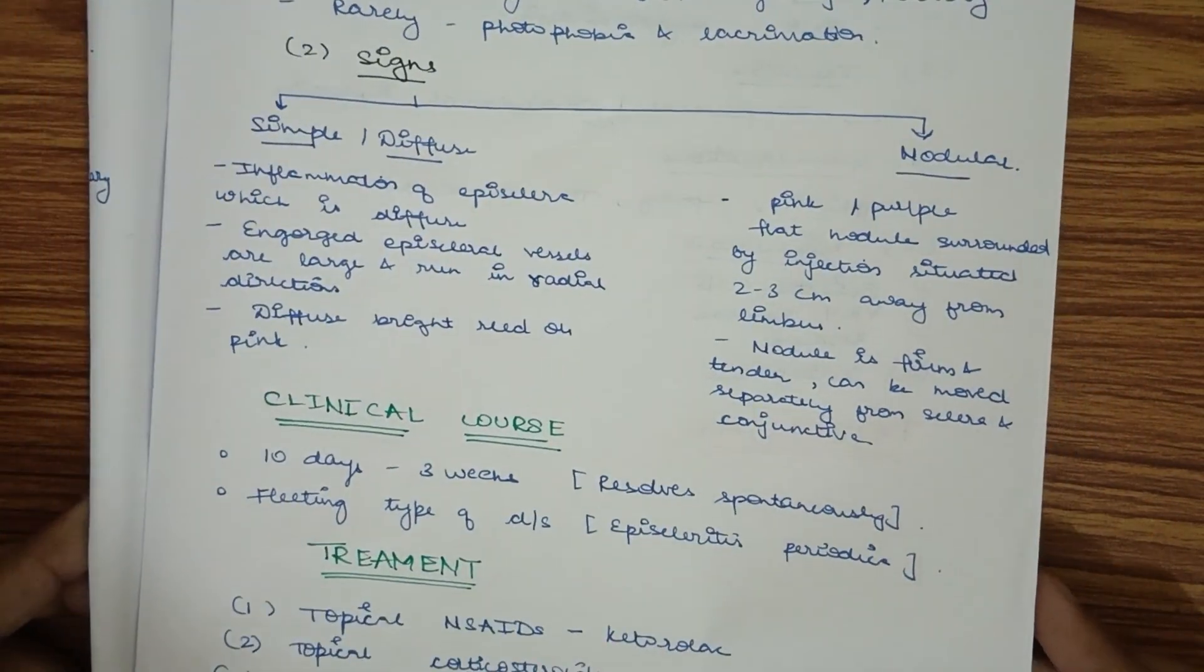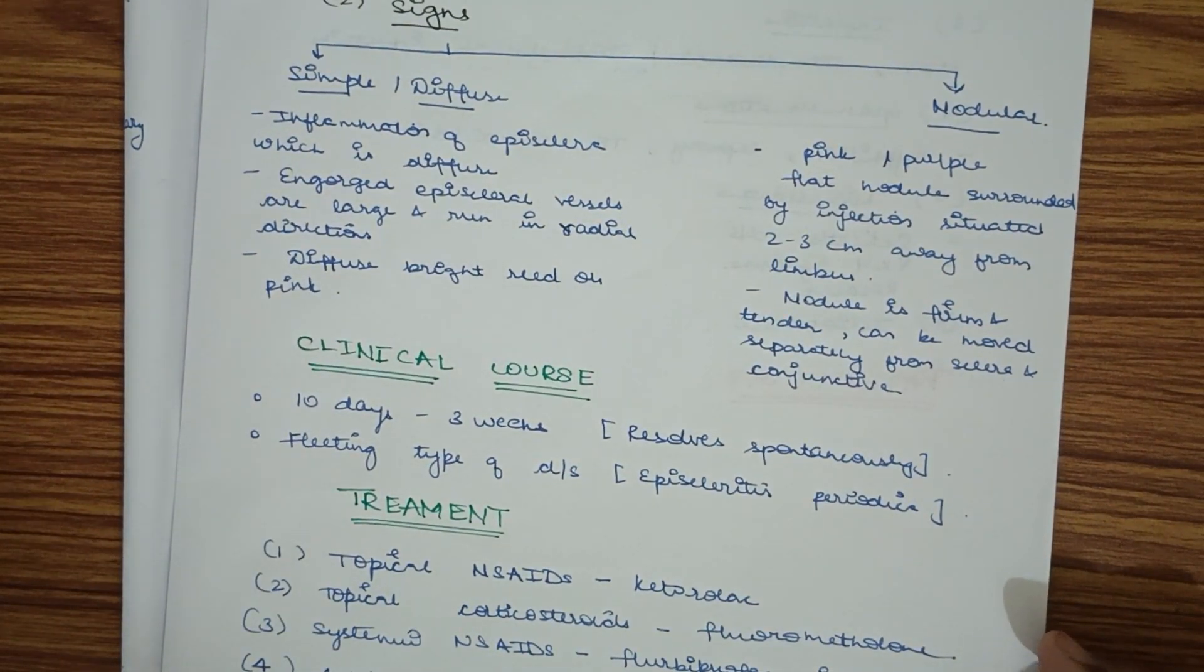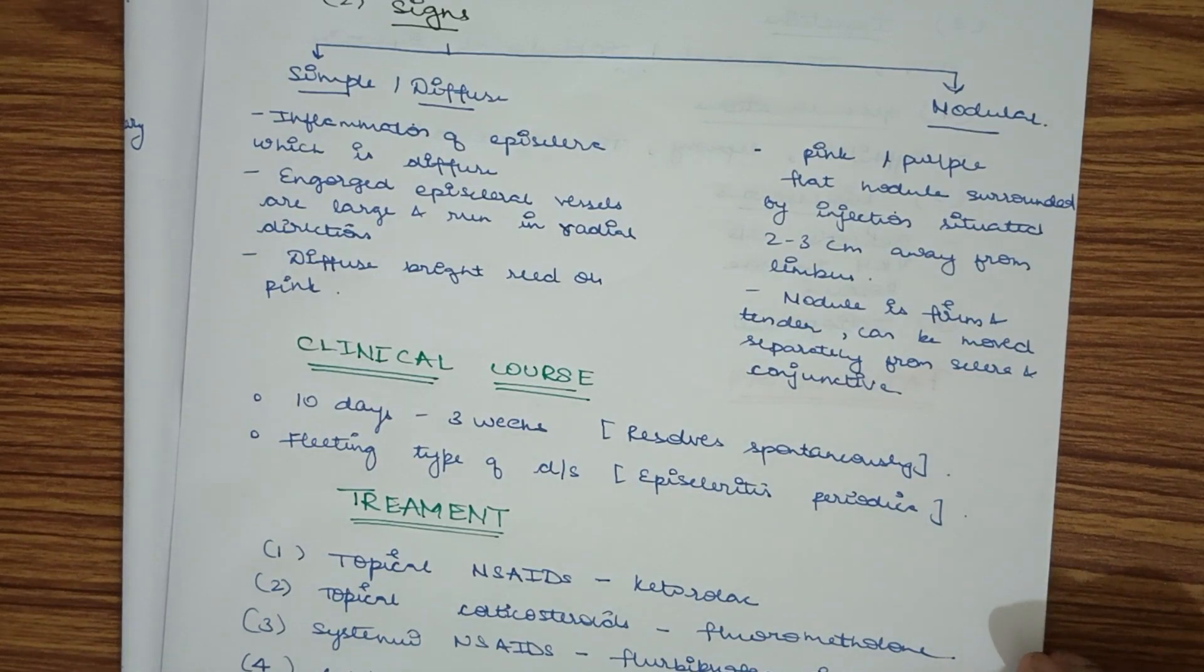Clinical course: it resolves spontaneously in 10 days to 3 weeks. Sometimes a fleeting type of disease may be seen, known as episcleritis periodica.